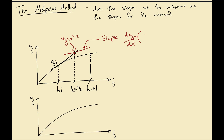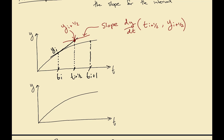This value yi+1/2 corresponds to the slope dy/dt evaluated at (ti+1/2, yi+1/2). Looking at the same function: starting from (ti, yi), our goal is to reach ti+1. We take that midpoint slope and use it here, hoping that when we extend it, it gets closer to the true value.